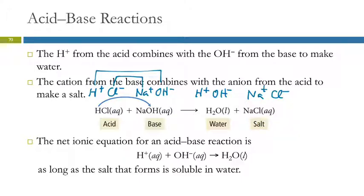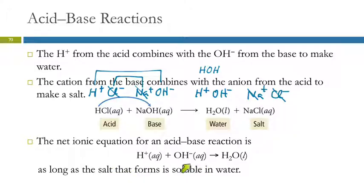Sodium and chloride combine to give sodium chloride—salt is a generic word for ionic compound. Hydrogen ion (+1) and hydroxide ion (-1) combine to give H2O. When we look at the net ionic reaction, the chlorides and sodium ions are spectators. So the net ionic equation for most acid-base reactions is: H+ + OH- → H2O.